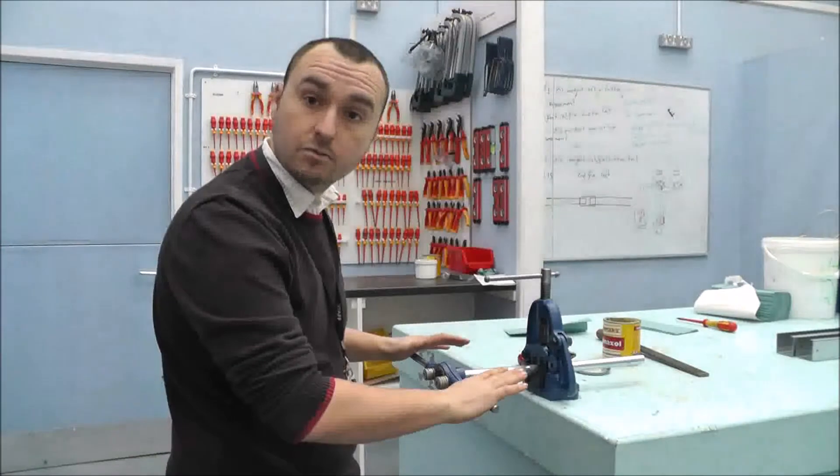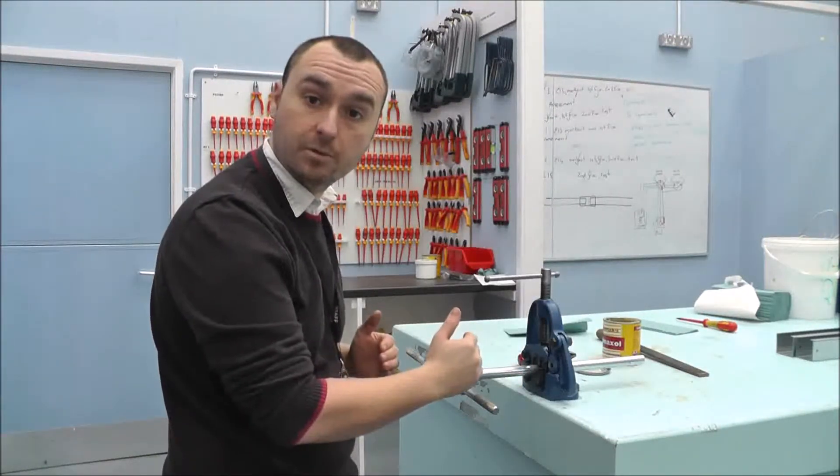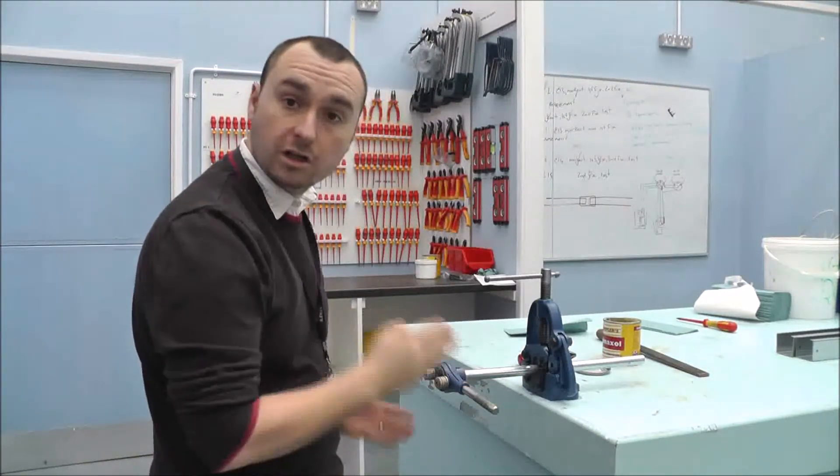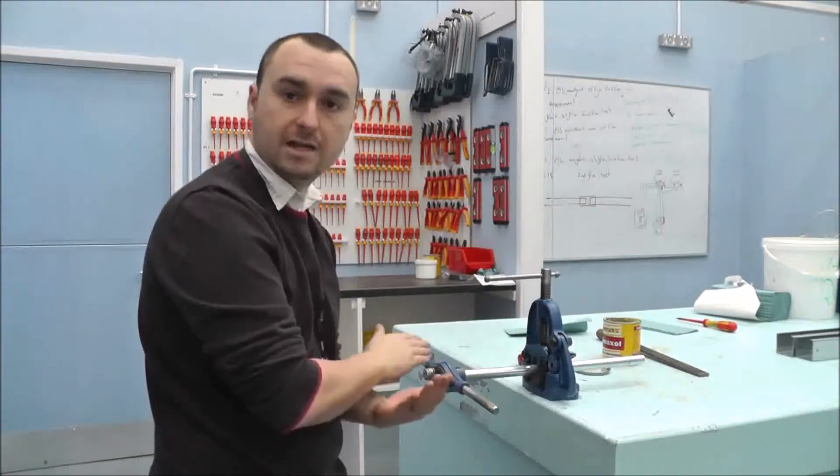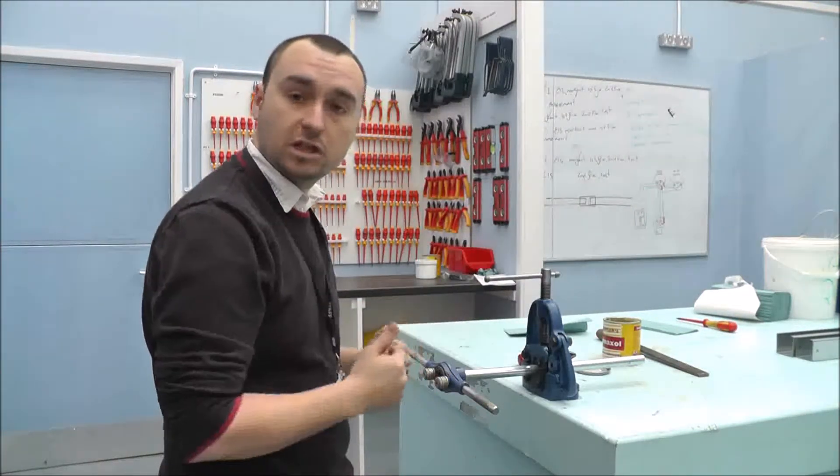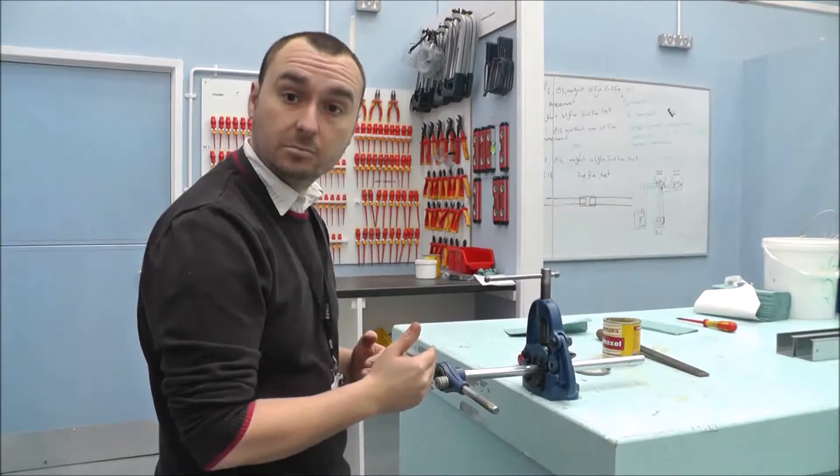Now the stock and die is in place, we're going to continue the threading process. We're going to turn it 360 degrees and then back 180. This just ensures a nice cutting process.